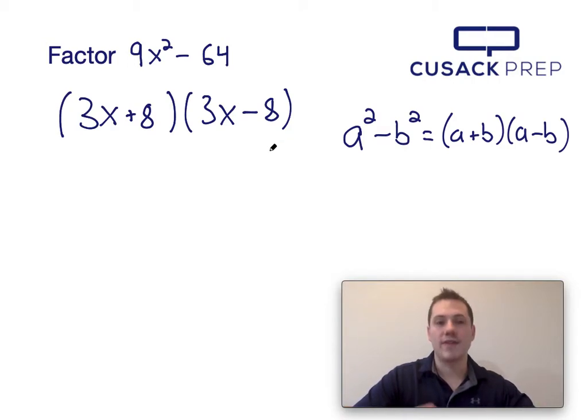And there you have it, that's how you factor 9x squared minus 64 via the difference of squares. Thank you for watching.